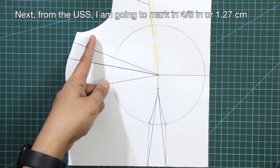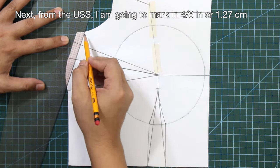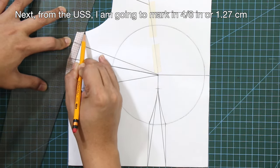Next, from the underarm side seam, I'm going to mark in 4/8 inch or 1.27 centimeters.